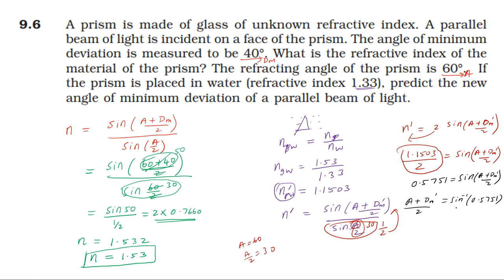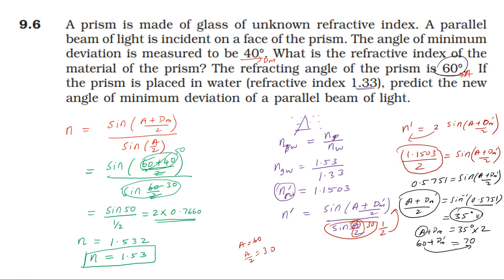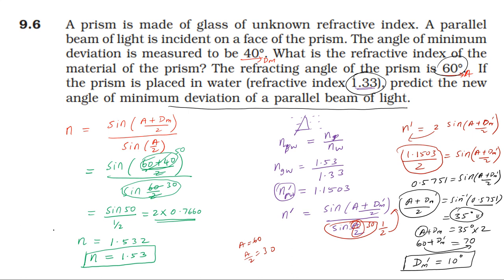The relative refractive index of the prism with respect to water gives a value of 16. So, 16 plus the new minimum deviation equals 70. The new minimum deviation is equal to 10 degrees. Therefore, when the prism is placed in water, the minimum deviation for a parallel beam of light is 10 degrees.